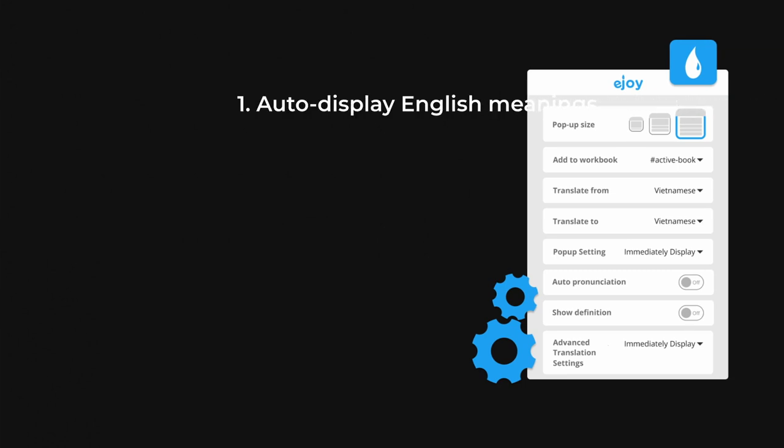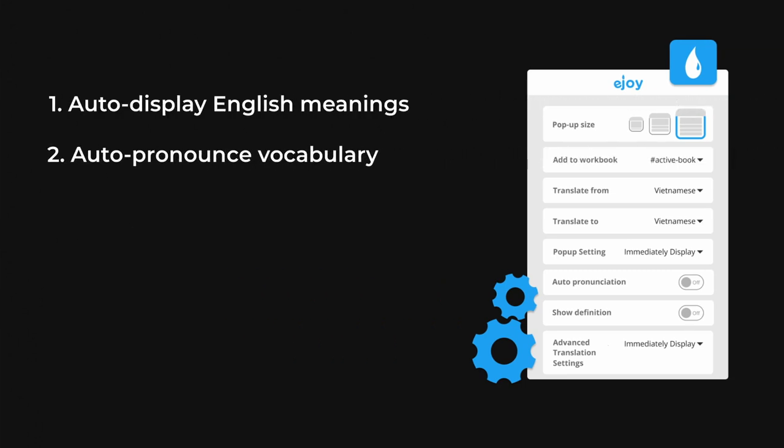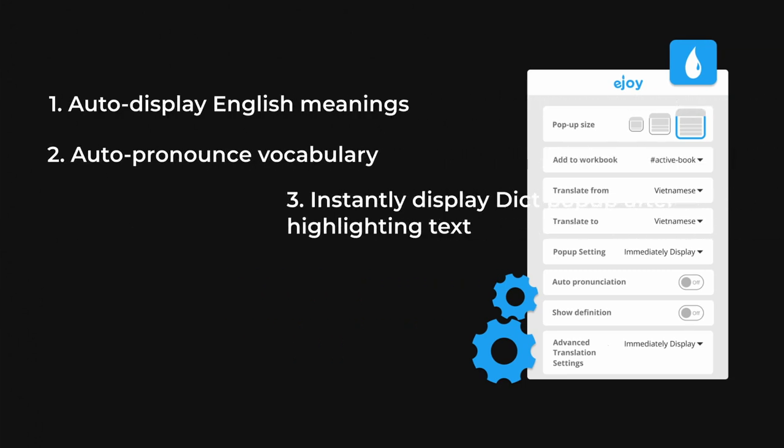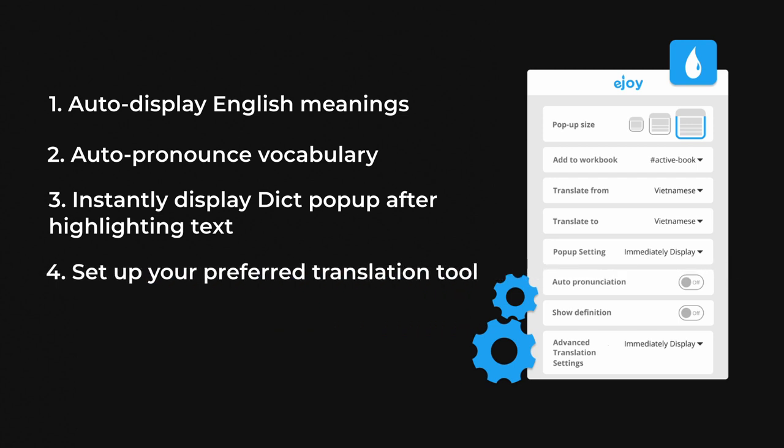Now you know how to auto-display English meanings when looking up words, how to automatically pronounce vocabulary, how to instantly display a pop-up after highlighting a word or paragraph, and how to set up your preferred translation tool when using both eJoy and GlottoJoy. Change the settings as you want to learn English effectively.